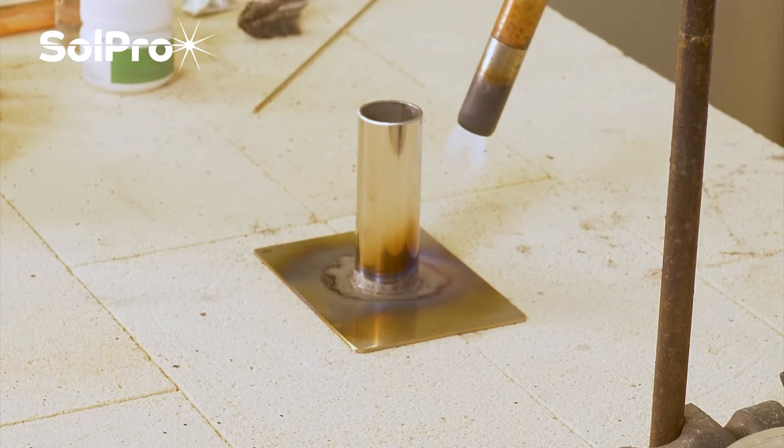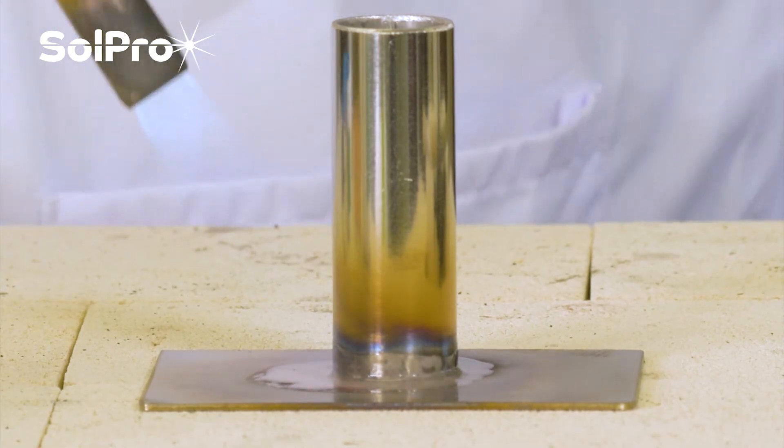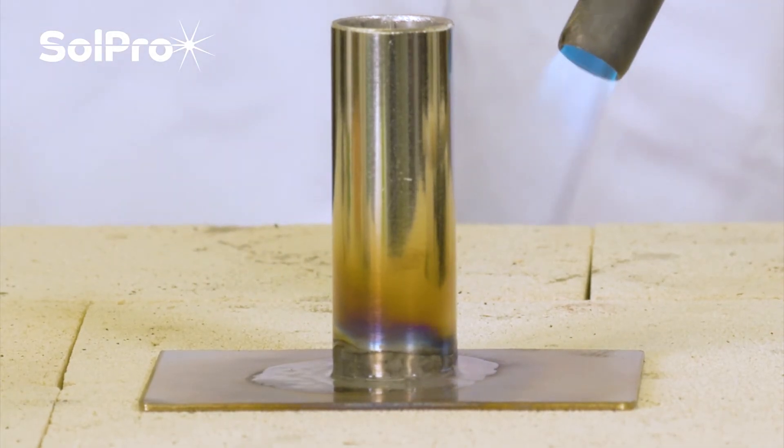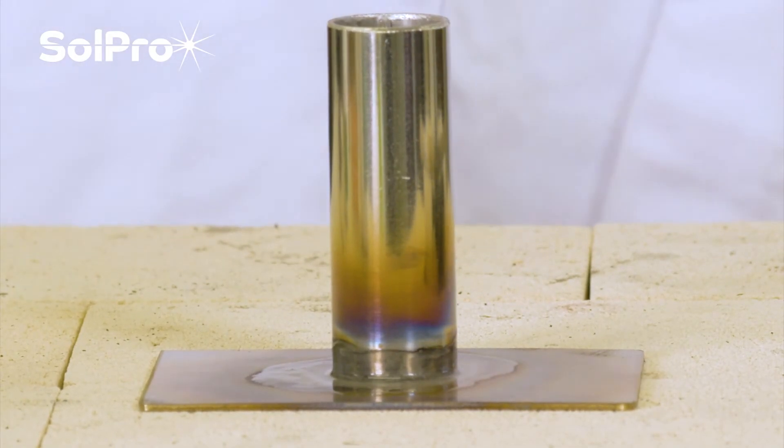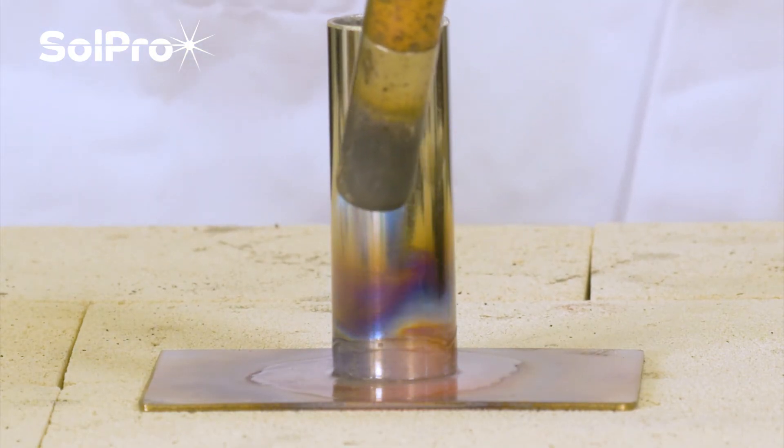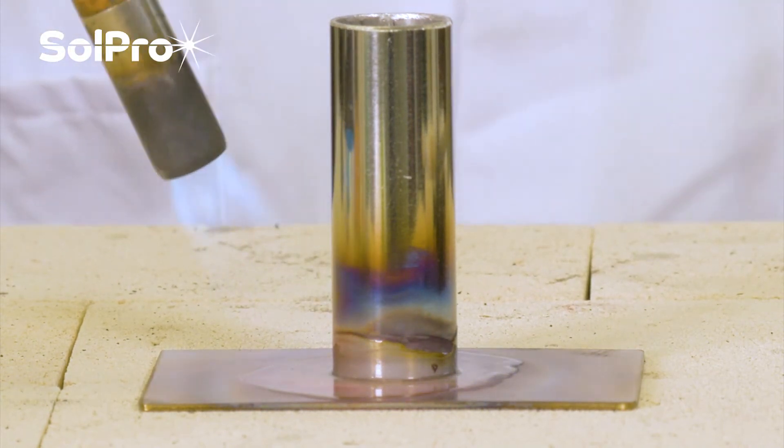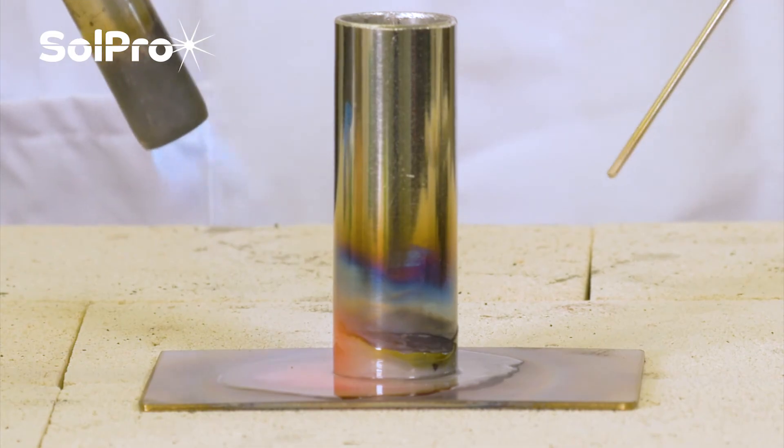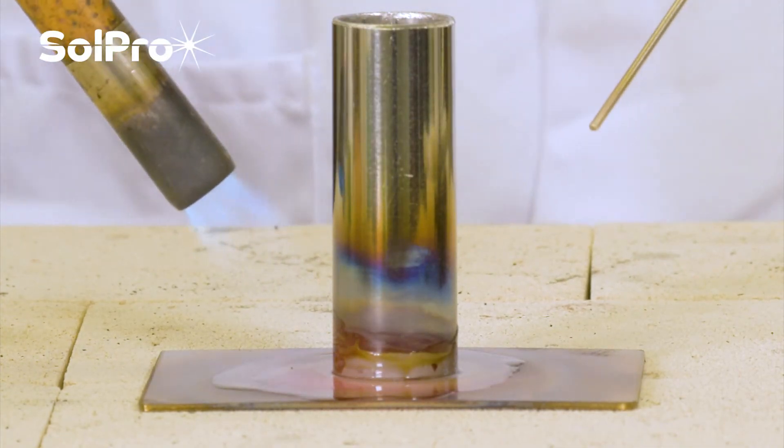That's now got a glassy film which is the flux actually starting to activate, starting to do its job, which also means that the materials are getting up to a nice temperature. We're looking for a cherry red. You can just see it starting to come. And what we're going to do is apply the brazing alloy on the opposite side to the flame, and you'll see that the brazing alloy will get drawn round to where the heat source is.